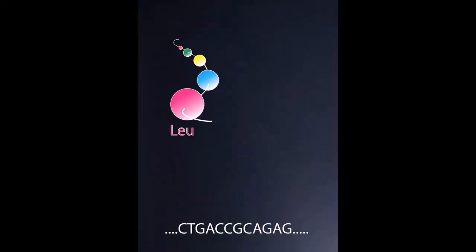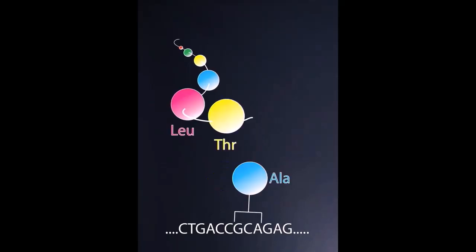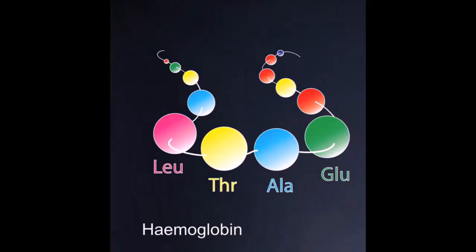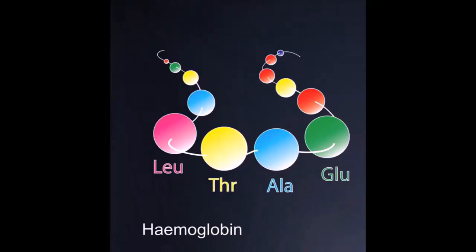Next, ACC codes for threonine. Then comes alanine. Finally, GAG codes for glutamine. This protein is hemoglobin, an important component of your blood.